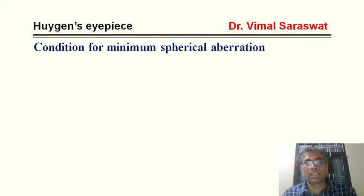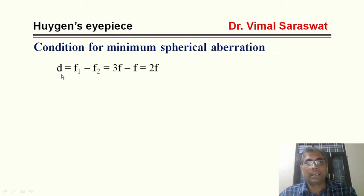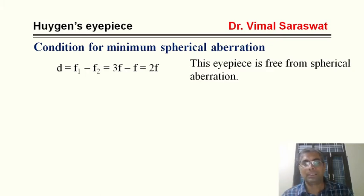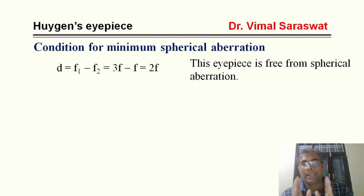Now, condition for minimum spherical aberration: d = F1 − F2. With F1 = 3f and F2 = f, we get d = 3f − f = 2f. Since the distance between the two lenses is 2f, this eyepiece is free from spherical aberration as well as chromatic aberration.